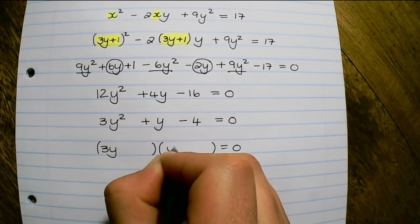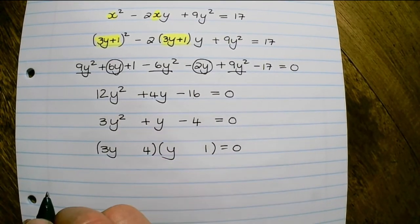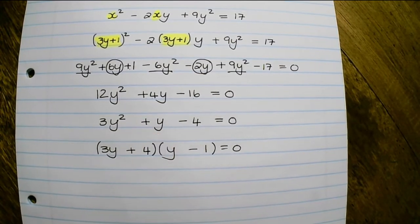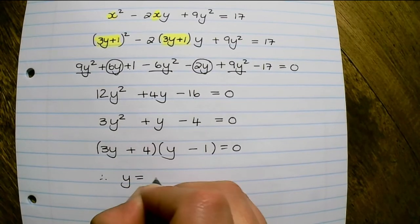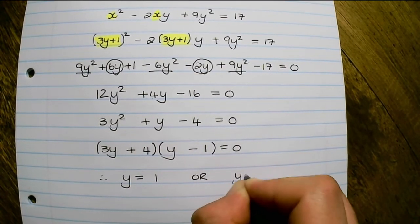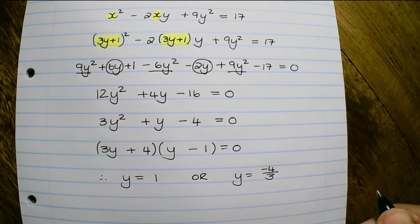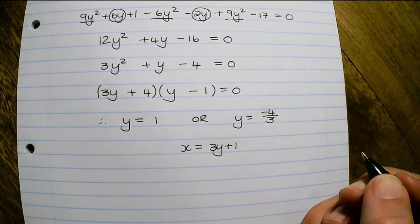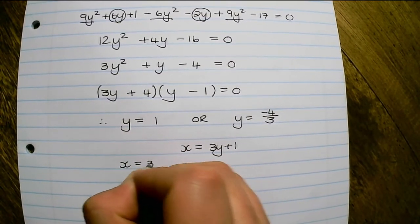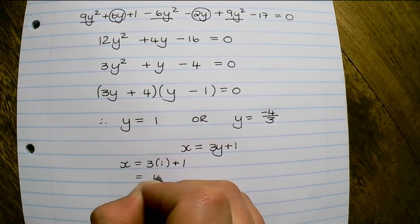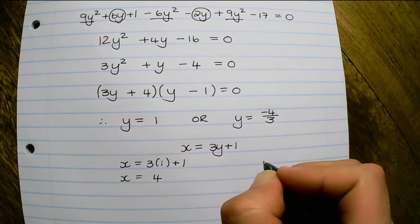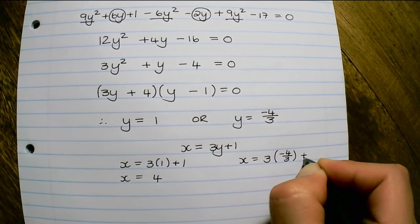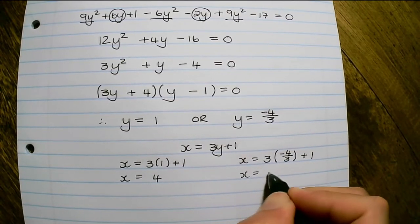Factorizing gives 3y and y, with factors 4 and 1. That gives plus 4y minus 3y which equals plus 1y. Therefore y equals 1 or y equals negative 4 over 3. From earlier, x equals 3y plus 1. So the first value of x is 3 times 1 plus 1, which equals 4. Or x equals 3 times negative 4 over 3 plus 1, which is negative 4 plus 1, meaning x equals negative 3.